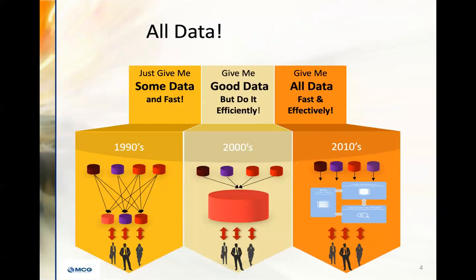Used to be: give me some data, give it to me fast. We didn't have data warehousing back then. Data warehousing got some things together for us in the 2000s. And now it's all data — give it to me fast and effectively. Don't let any data slip away without getting the value out of it. That means storing data for current and potentially future uses, and one of the biggest areas has got to be artificial intelligence.